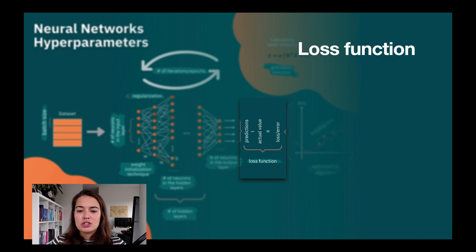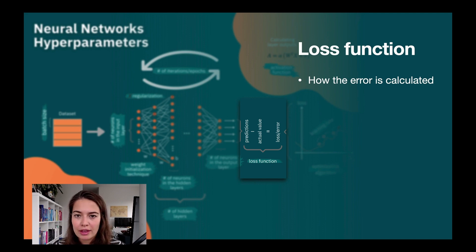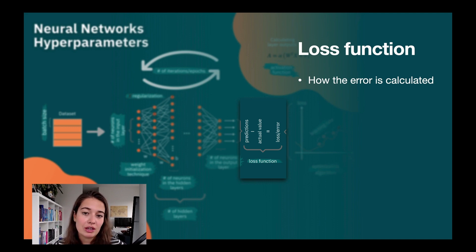The loss function is how we calculate the error. You can calculate it as prediction minus actual value, but there are different ways of calculating this.